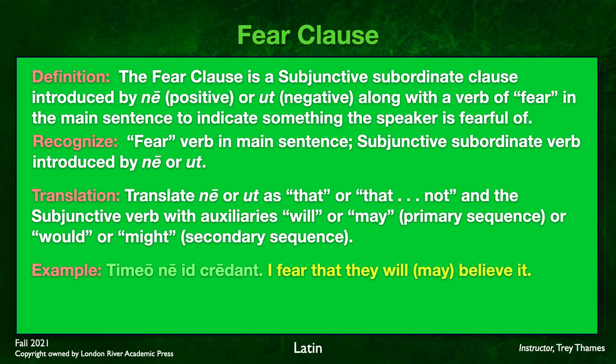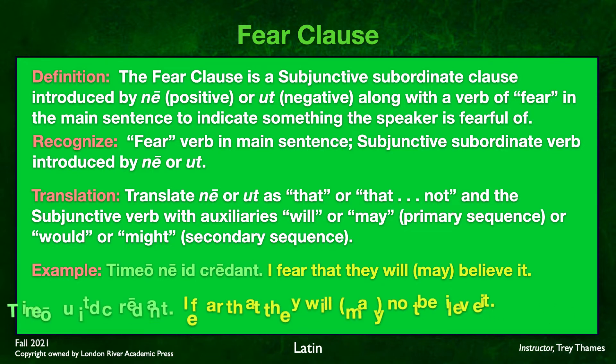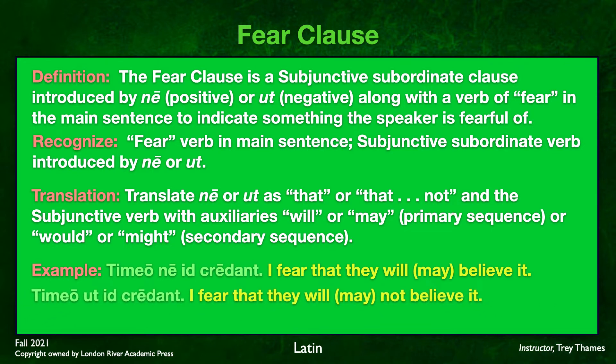Notice: we have a present tense main verb and a present tense subjunctive, so that subjunctive is happening at the same time as the main verb — we say will or may. The negative version: timeo ut id credant — 'I fear that they will not believe it' or 'that they may not believe it.' The ut here is introducing and negating the fear clause.